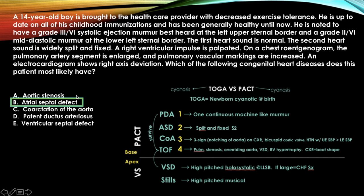The answer is atrial septal defect. The question gives a split and fixed S2 — on both the pediatric chart and Mr. Taps — plus a right ventricular impulse, which is also part of ASD.